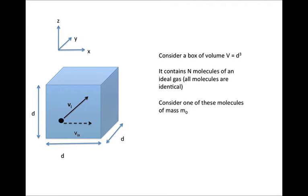For this derivation, we're going to assume that we have a cube with a volume d cubed, where each of the sides has a length d. Inside this cube, we're going to put N molecules of an ideal gas, and each of these molecules is going to have a mass m₀.